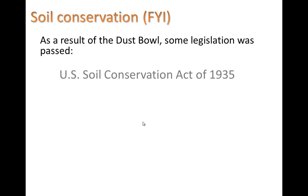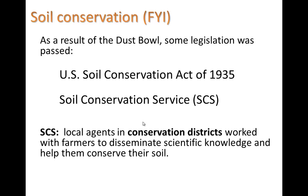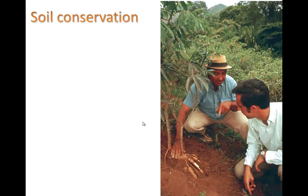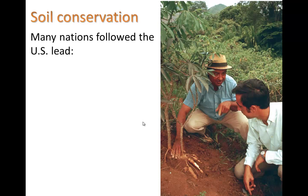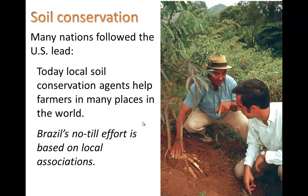What did we do in response? There was legislation passed — the US Soil Conservation Act of 1935 — and Soil Conservation Services, a government service to help conserve soil. These services were mostly local agents in conservation districts who worked with farmers to disseminate scientific knowledge and help them conserve their soil. Many nations followed the US lead, and today you have local conservation agents helping farmers in many places in the world. Brazil's no-till effort is based on local associations. Here we see a farmer in blue and an extension agent in Colombia — extensions are parts of universities that interact with local farmers to disseminate knowledge gained from research studies.